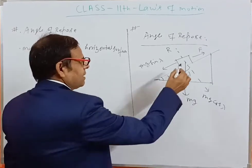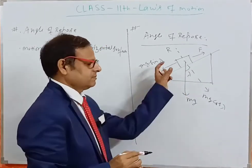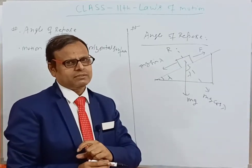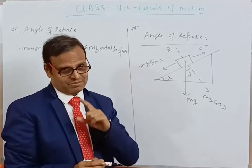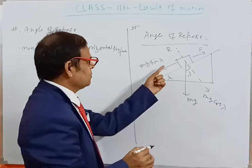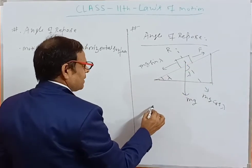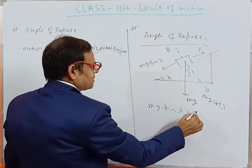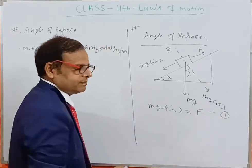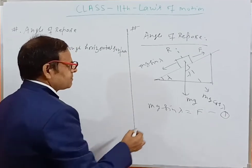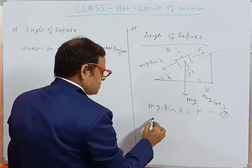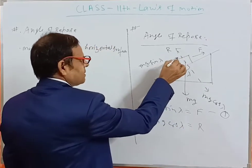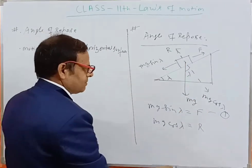The body is just at the verge of motion — not actually under motion. This is a very important point to note. So the friction force F is balanced by mg sin lambda: mg sin lambda = F — Equation 1. And mg cos lambda is equal to R, the normal reaction: mg cos lambda = R — Equation 2.